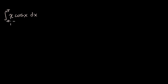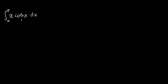So we're probably going to have to use a slightly more sophisticated technique. In general, if you see a product of functions, and if one of these functions is fairly straightforward to take the anti-derivative of without making it more complicated, like cosine of x, and another of the functions, like x, if you were to take its derivative, it gets simpler — in this case it would just become one — that's a pretty good sign that we should be using integration by parts.